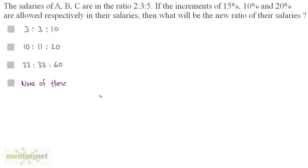The salaries of A, B and C are in the ratio of 2:3:5. If the increments of 15%, 10% and 20% are allowed respectively in their salaries, what will be the new ratio of their salaries?